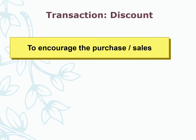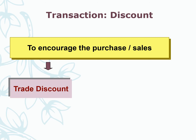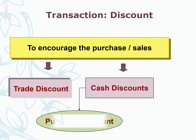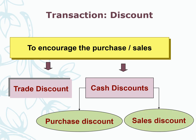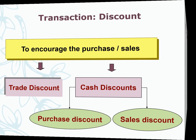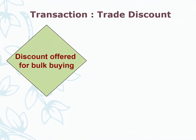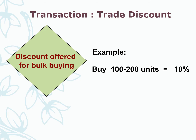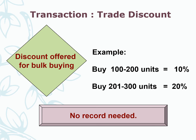Discount is given to encourage purchase or sales. There are two types of discount. Trade discount is the discount offered for buying in quantity. For example, if you buy 100 to 200 units, the discount is 10%, and if you buy 200 to 300 units, the discount is 20% — the more you buy, the more discount you get. No record is needed for trade discount because the discount is already calculated in the total amount on the invoice.